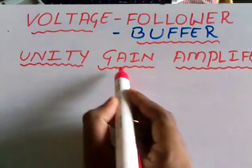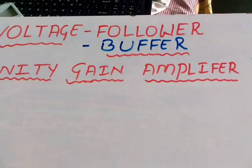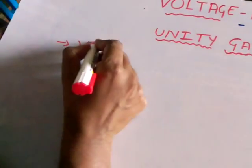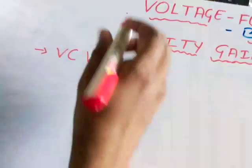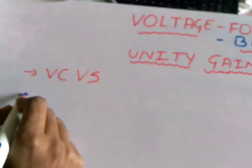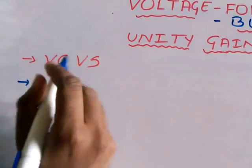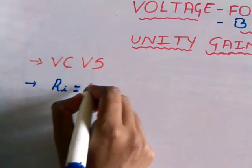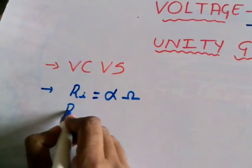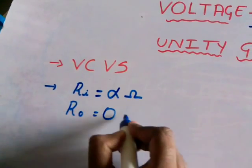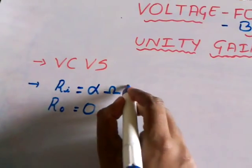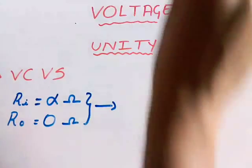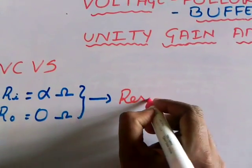It is also called unity gain amplifier. Generally, this voltage buffer is a voltage-controlled voltage source. This device has an input resistance of, ideally speaking, infinite ohms, and an output resistance of, ideally speaking, zero ohms. By this, we can easily conclude that this device is acting as a resistance transformer.